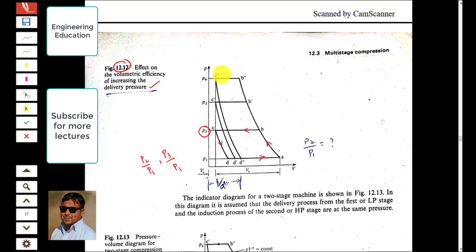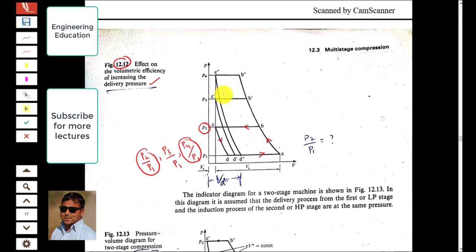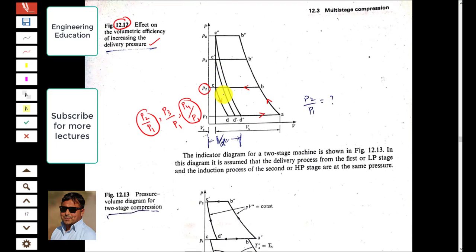For cycle A-B''-C''-D'' the pressure ratio is p4/p1. For the lesser pressure ratio we have high volumetric efficiency, while for the higher pressure ratio we have less volumetric efficiency. It is very clear from the diagram that by increasing the pressure ratio volumetric efficiency decreases, and if we reduce the pressure ratio volumetric efficiency increases.